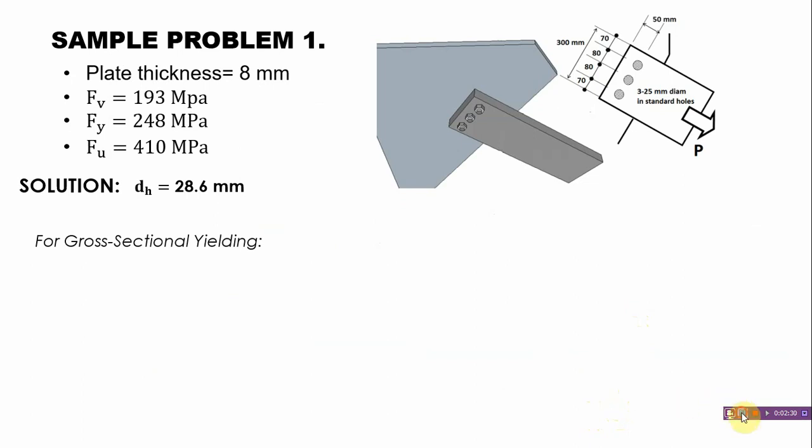Step 2: We are going to apply the 5 modes of failure for our tension members and individually get the safe tensile load P. For our gross sectional yielding, we have the formula P = 0.6F_y × A_g. In this plate, we need to consider this portion here where there's no bolt connection. It's just the width times the thickness.